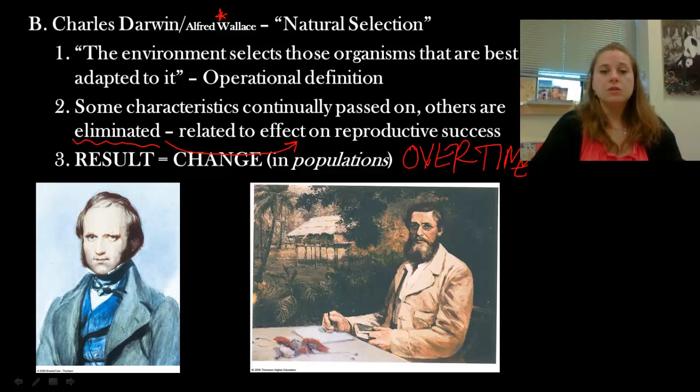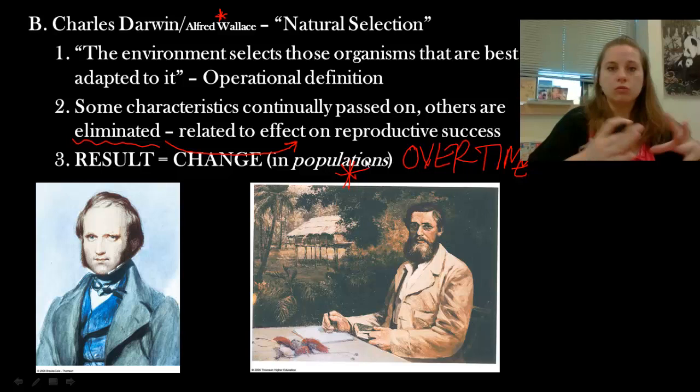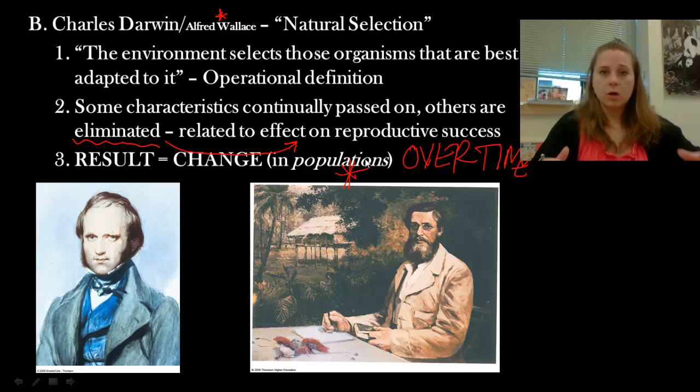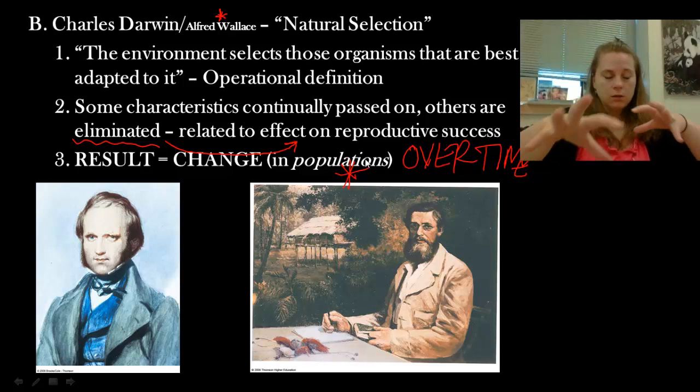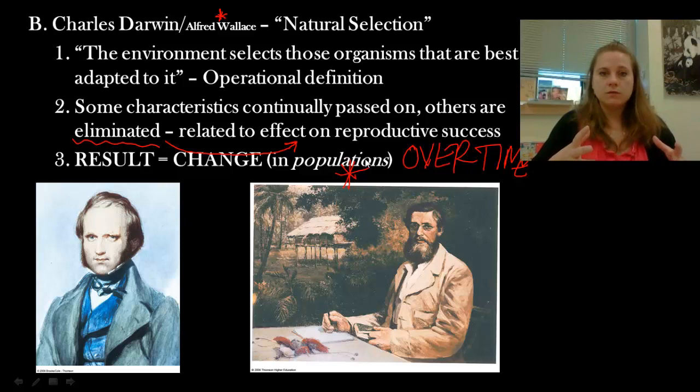This is where Darwin and Lamarck's ideas really diverge. Lamarck talked about change occurring to the individual, which then gets passed on. Darwin said no — within a population, the differences already present in an organism, if they improve reproductive success and survival ability, are the traits that get passed on to the next generation. The change is to the population, not the individual.